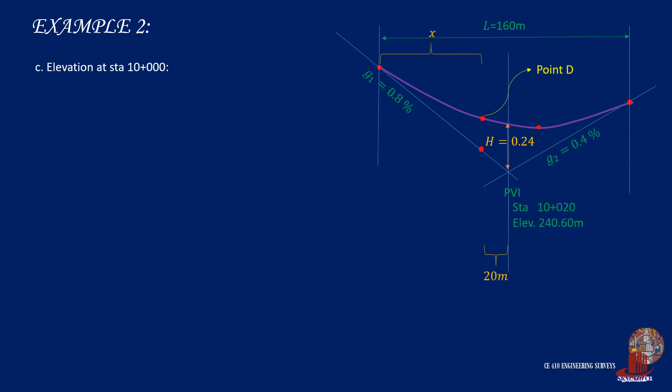The third requirement asks for the elevation at station 10+000. Note that this is stations before the point of vertical intersection. Let's start by solving the elevation of the tangent at that station, and we get the given 240.6, plus the grade with the distance of 20 meters, which is taken from 10+20 minus 10+000. Elevation C is computed as 240.76 meters.